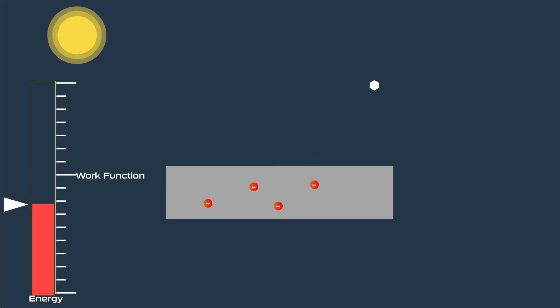If the frequency of photon is less than this threshold value, then electrons will not be able to eject from the surface.